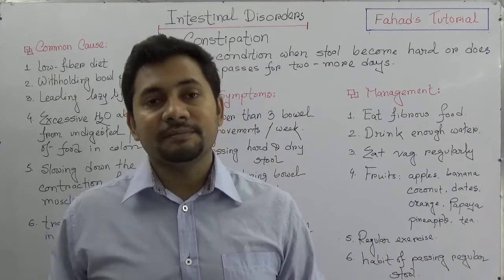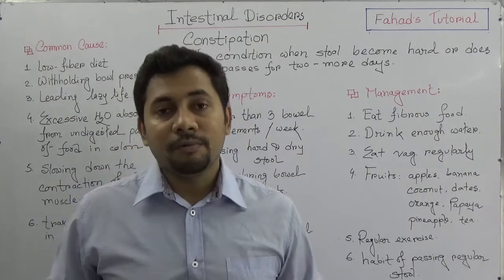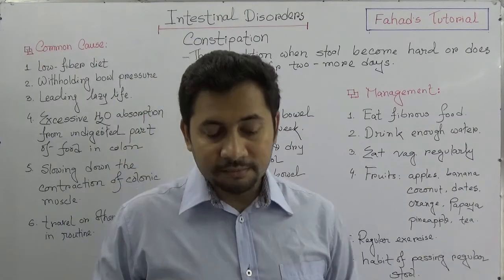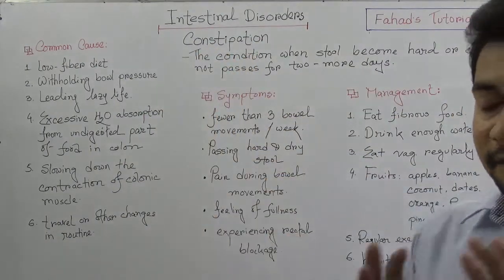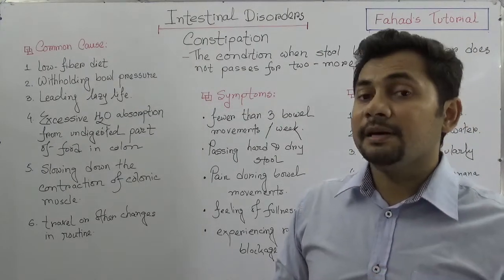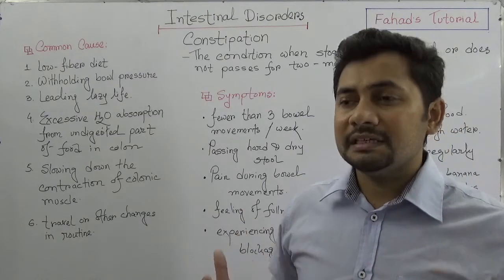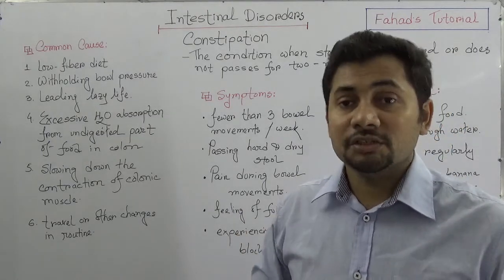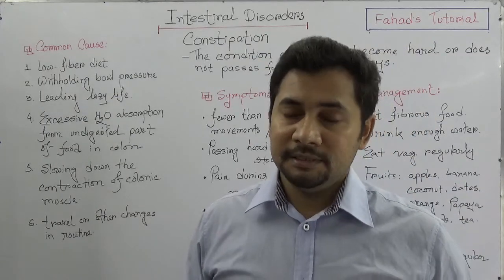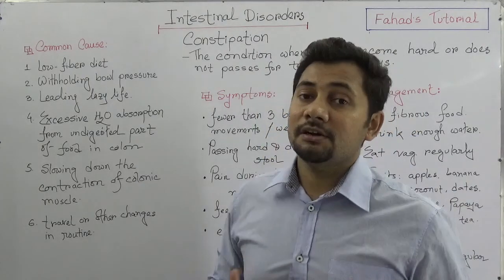In severe cases, constipation can be fatal, so it's important to know why it happens. The first common cause is low fiber intake in diet. If somebody is consuming more meats and proteins but no fiber, they might develop constipation.